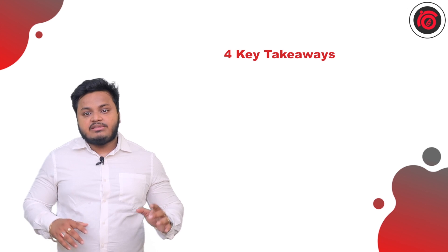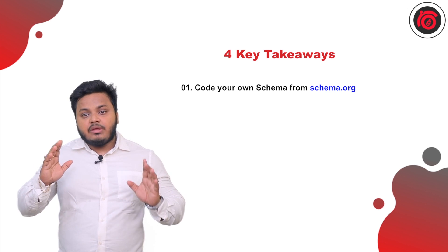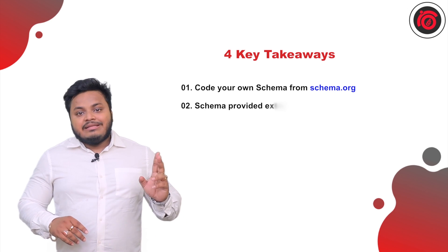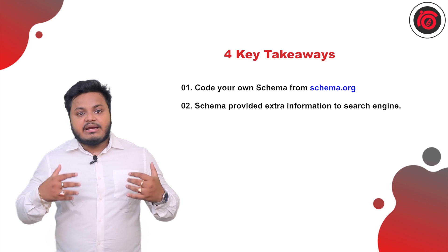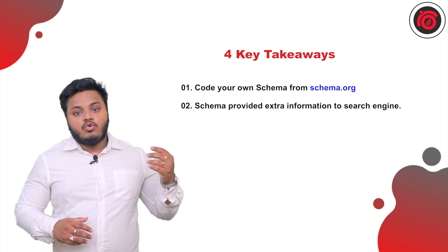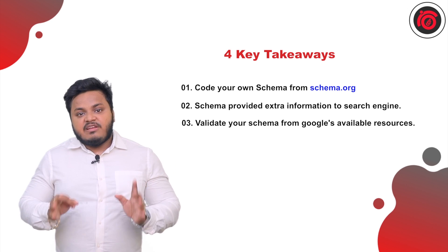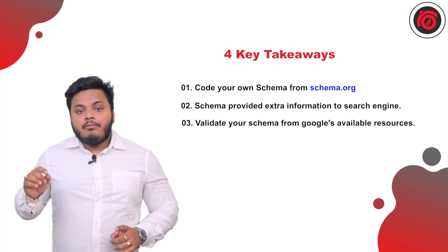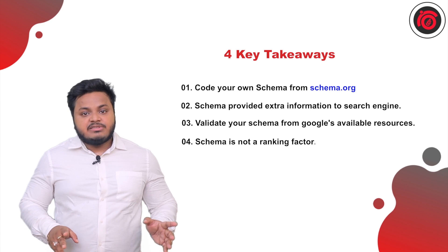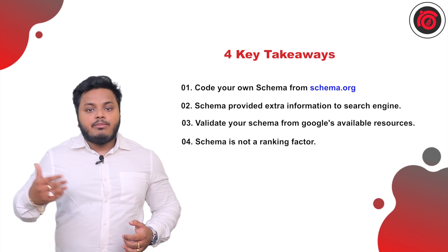Four key takeaways from this discussion: First, always code your own schema from schema.org and use JSON-LD, as it is lossless and supports a wide range of schema variables. Second, schema is simply extra information provided to search engines so they can understand a page's context — who the author is, what the images and videos are, and so on. Third, always validate your schema using Google's Structured Data Validator or Rich Snippet Tool before publishing, as errors can be detrimental. Fourth, do not mistake schema for a ranking factor — it is an extension that helps search engines understand your content in a more meaningful way. Thanks for watching.